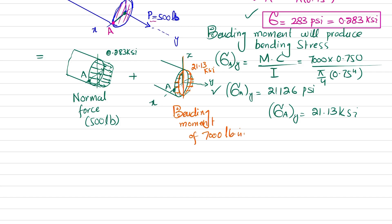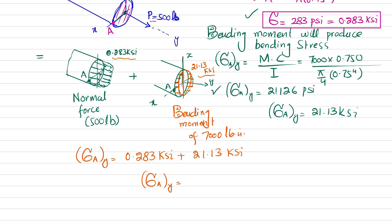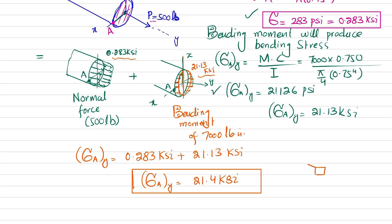The total state of stress at point A in the y-direction is the sum of both contributions: sigma_y equals 0.283 ksi (from normal force) plus 21.13 ksi (from bending moment) equals 21.4 ksi. Drawing the stress element at point A, with z-axis, x-axis, and y-axis as shown, the stress sigma_y equals 21.4 ksi acts in tension on the y-faces of the element.